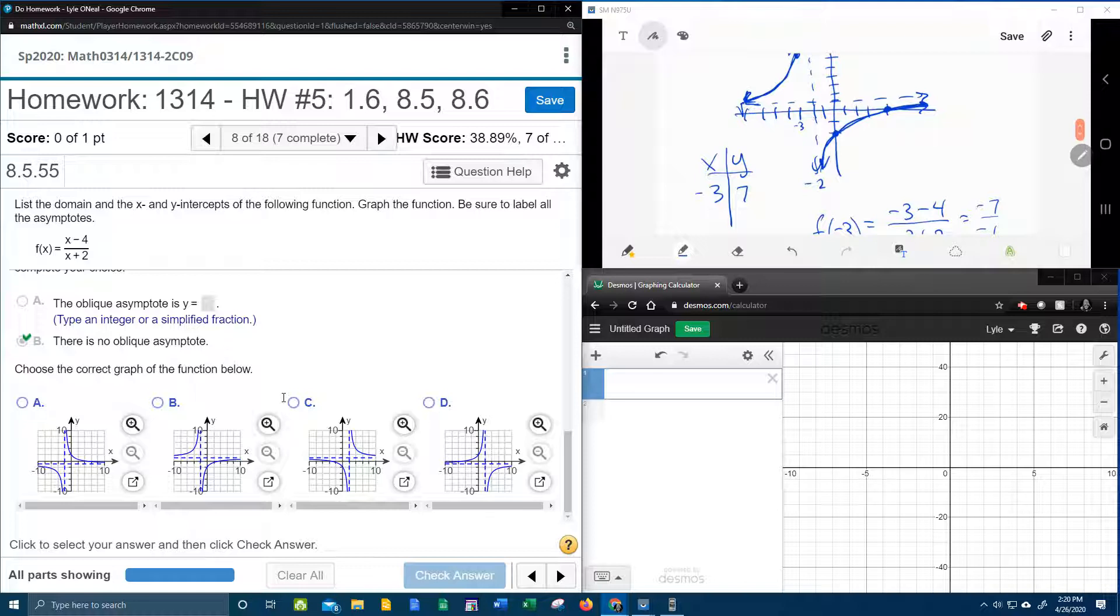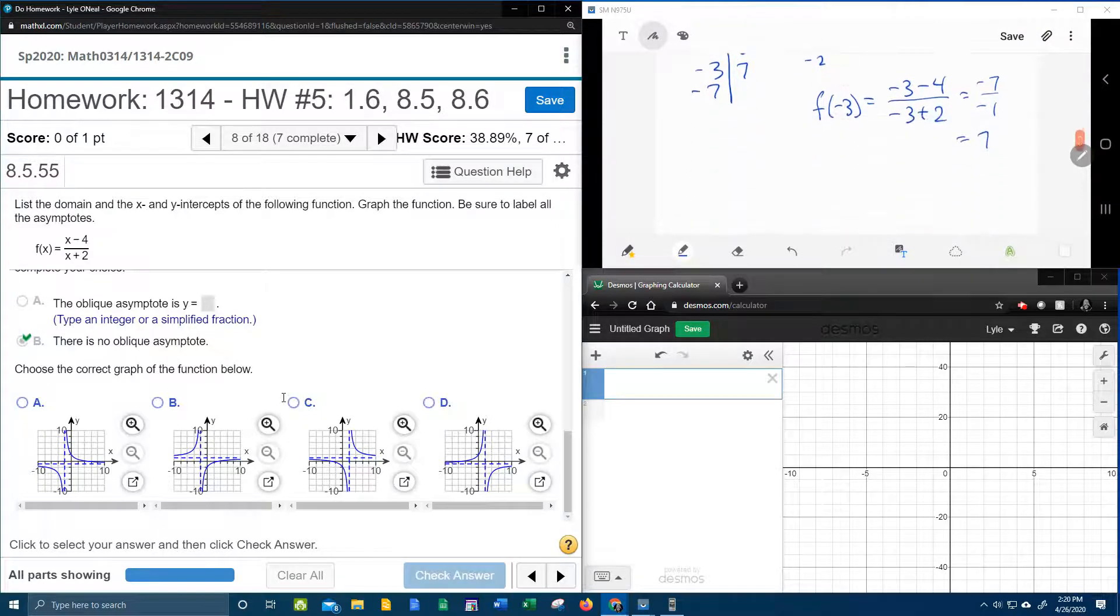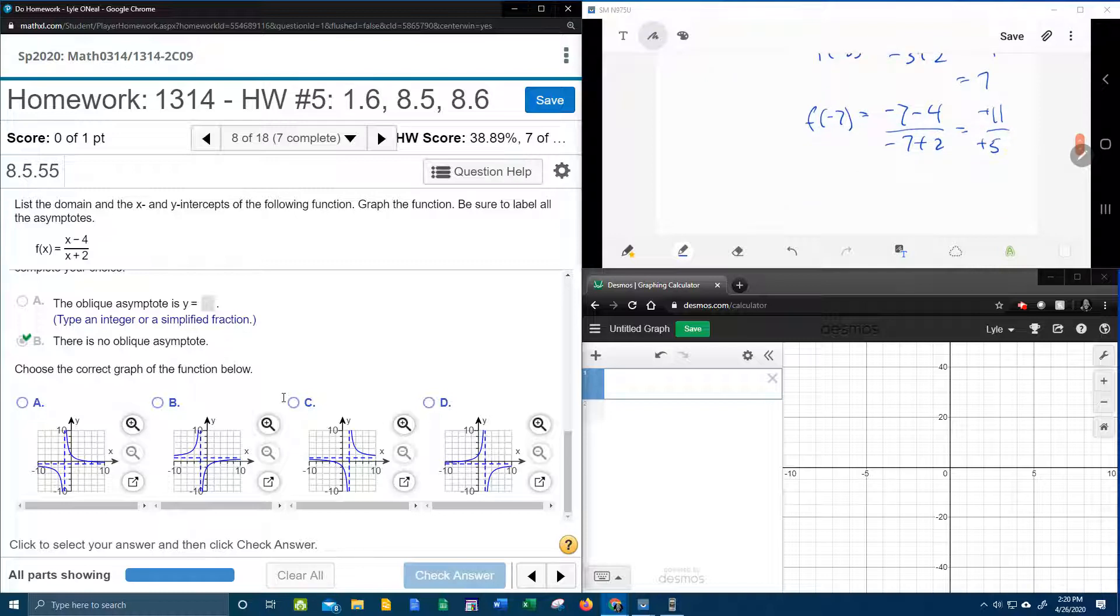negative 4, negative 5, negative 6. Let's do negative 7 just to get pretty far out here and see what's going on. So f of negative 7 is going to give me negative 7 minus 4 over negative 7 plus 2. 7 and 4 is 11, 7, 6, that's negative 5. Negative over a negative makes a positive.